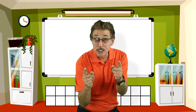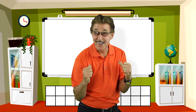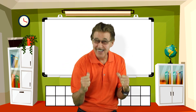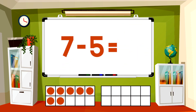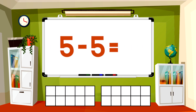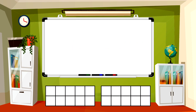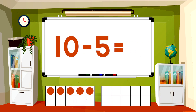Now you answer before me. 7 minus 5 equals 2. 5 minus 5 equals 0. 10 minus 5 equals 5.